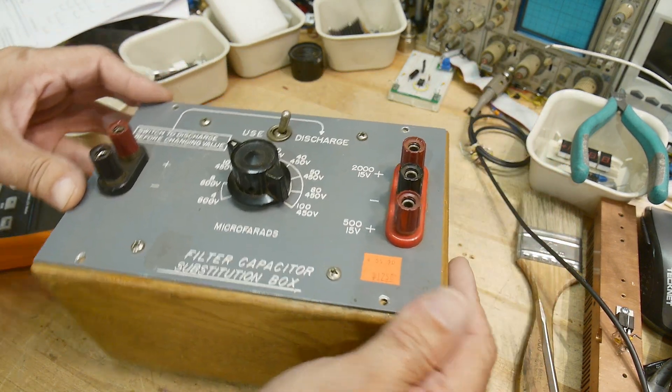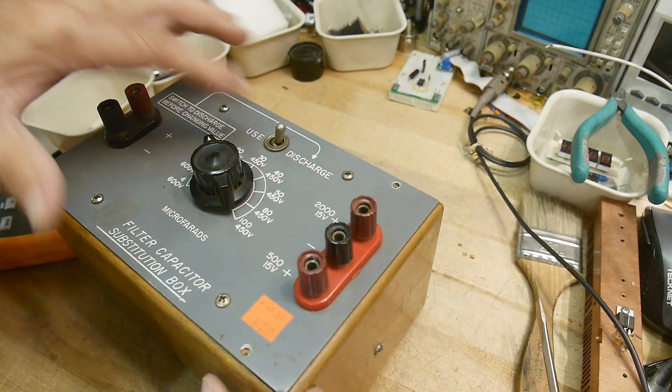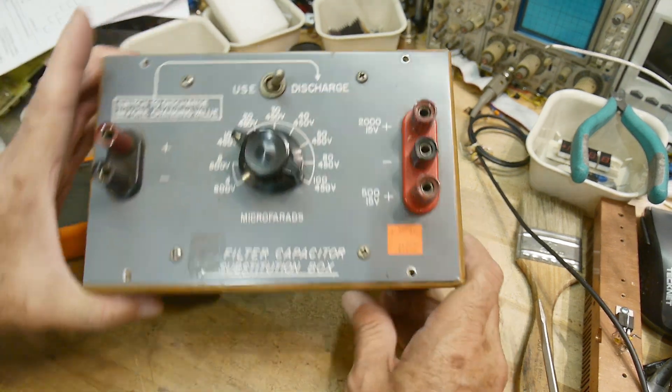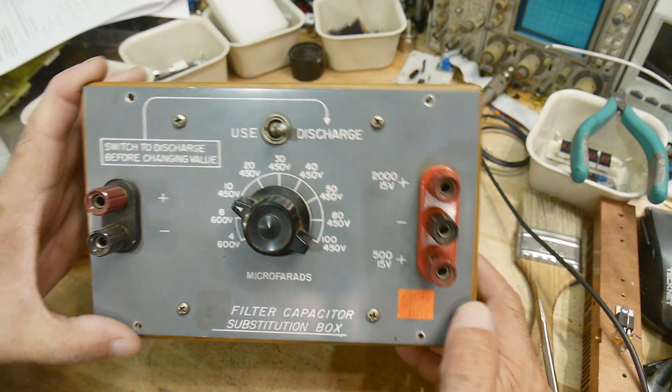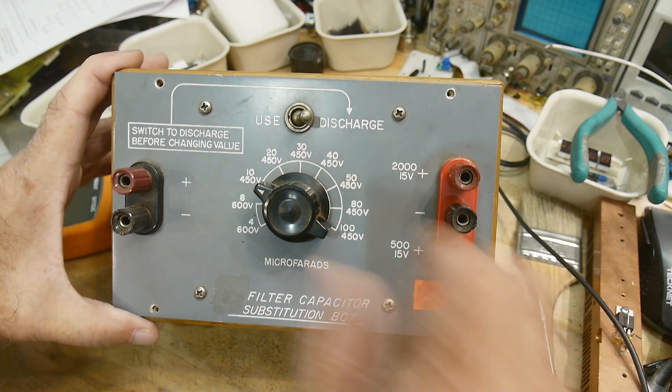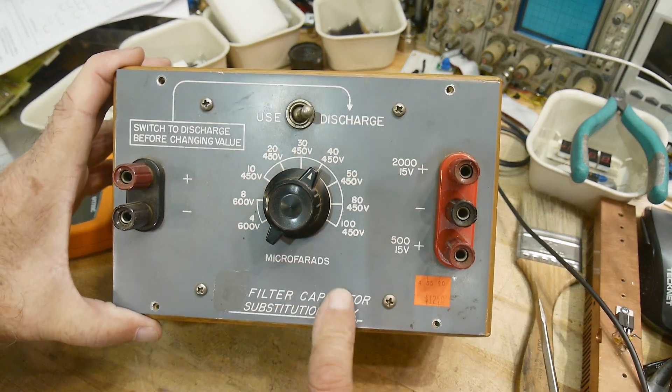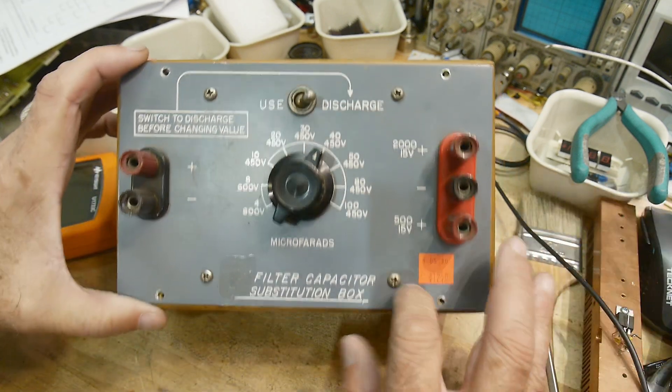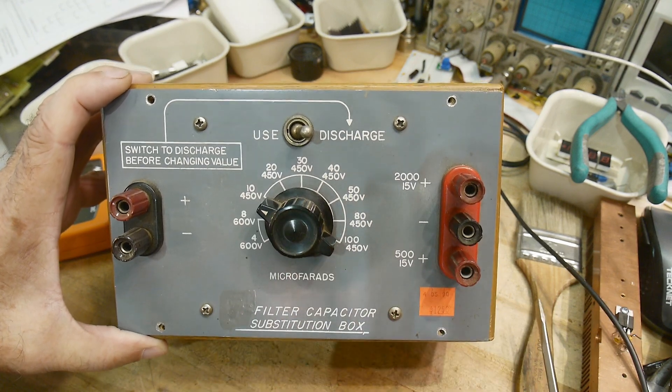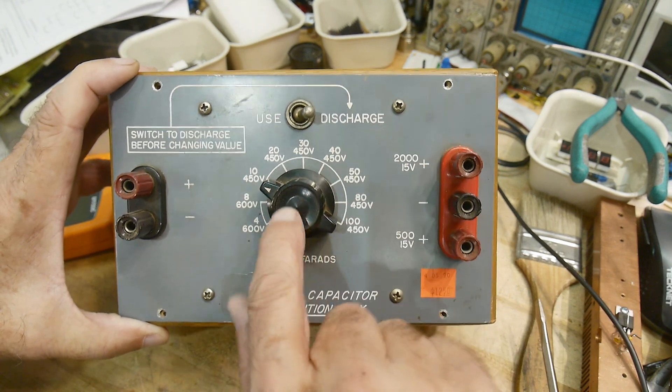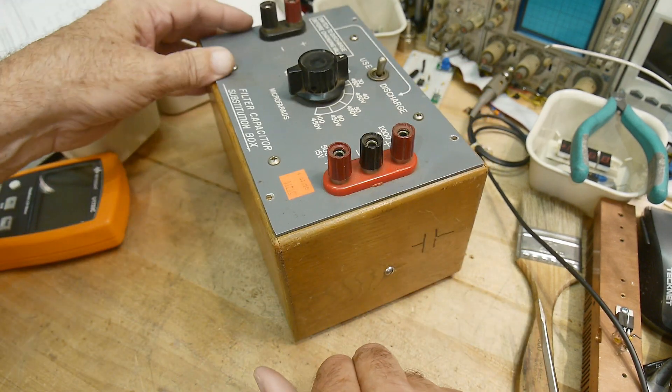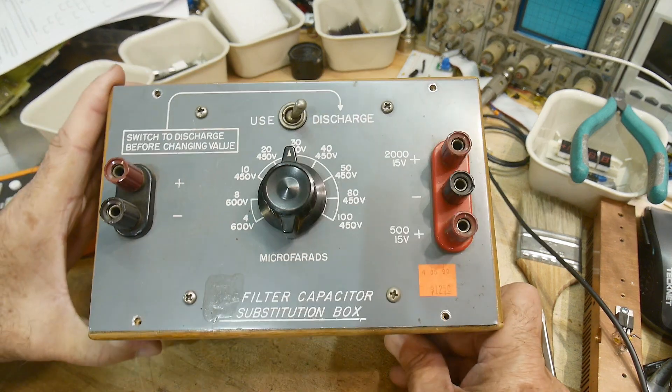If somebody reworked it that works on vintage radios, it might be a valuable thing to have in the lab. Anyway, there you go. Once again, no brand name - anybody knows who made these things, let me know, I'm curious. Pretty nice big thick aluminum front panel, nice big HP knobs. HP used that brand of knob. I don't think this is an HP device though. Anyway, there you go.